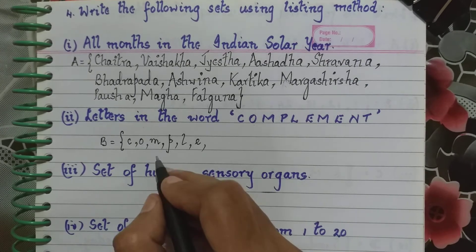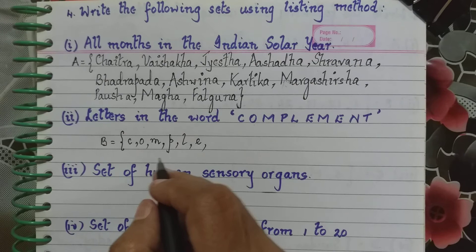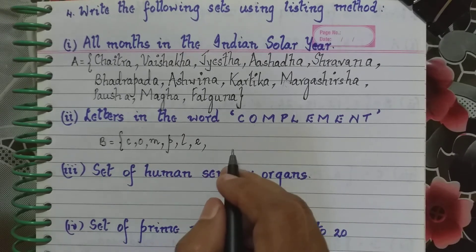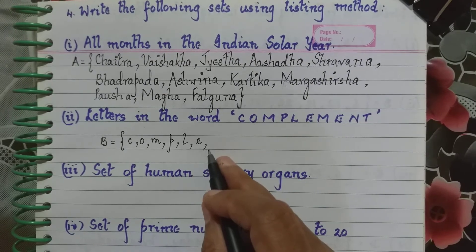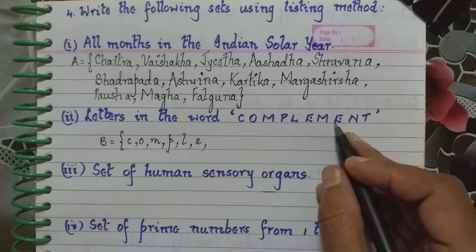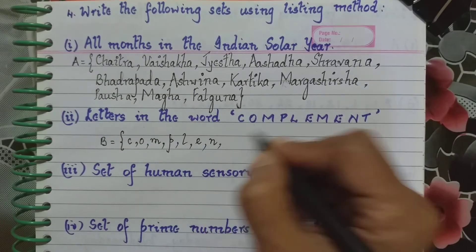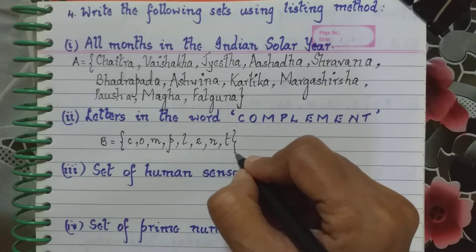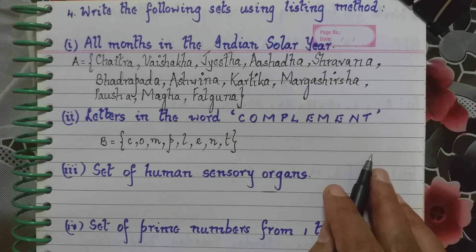Now after E again you have M, but M is written once. And you remember when I gave you the rules for writing the set, we said that the elements are not repeated twice, they are written only once. So once we have written M, we don't write M again. Then we have E. Have we written E again? Yes. N, has N been written? No, so we write N. And T also hasn't been written, so we write T. So these are the letters in the word complement.